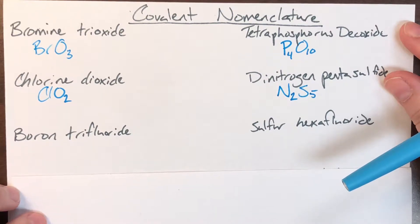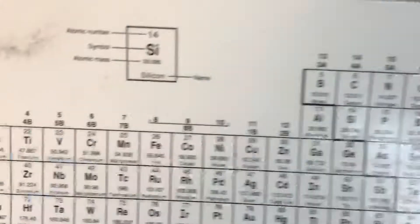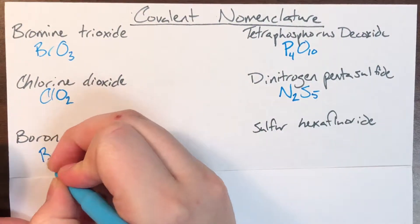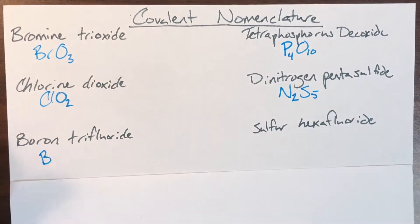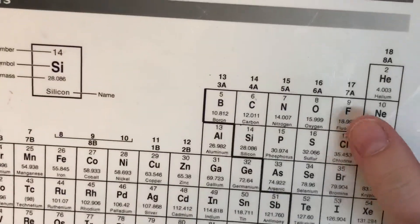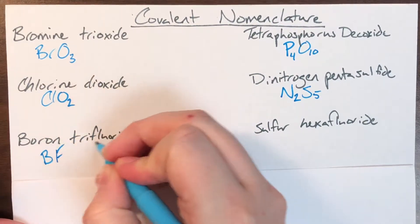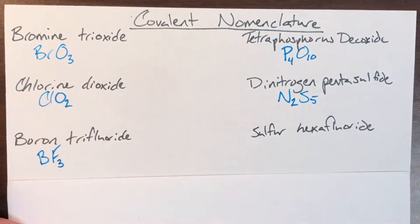Next is boron trifluoride. Boron is B. Then trifluoride: fluoride is F for fluorine, and tri means 3 of them. Boron didn't have a prefix, so no subscript is written for it. The formula is BF3.